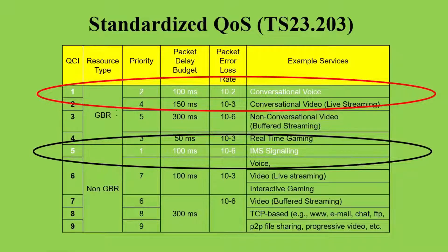The question is: which one has the highest priority — QCI 1 or QCI 5? If you look at the table, you see that even though QCI 1 has a higher priority in terms of guaranteed bit rate and so forth, specifically if you look at the priority column, QCI 5 has the highest priority.